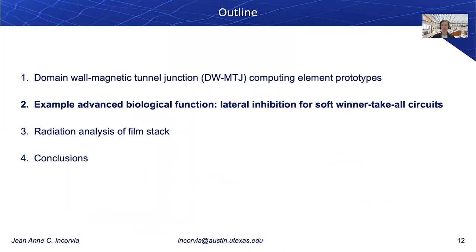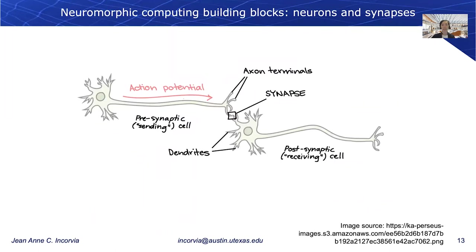Now that you have a brief introduction to these domain wall magnetic tunnel junctions, I want to go into one example advanced biological function: lateral inhibition. These domain wall MTJs can be applied to in-memory computing and neuromorphic computing, designed to act as both neurons and synapses. For neurons, we want them to represent a leaky integrate-and-fire neuronal model, where a neuron obtains a signal, integrates until it eventually fires, and if there's no signal, relaxes back to its original state.